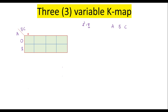Now we will see how to assign the binary numbers to each column. Here we have 2 variables. With 2 variables the 4 possible binary numbers we will get are: 0 0, 0 1, 1 0, and 1 1. Let me write the decimal equivalents: 0 0 is 0, 0 1 is 1, 1 0 is 2, and 1 1 is 3.